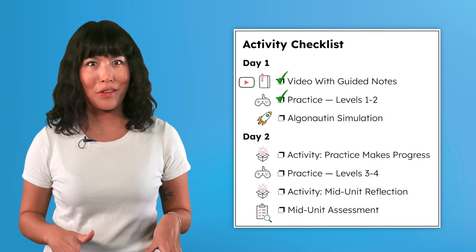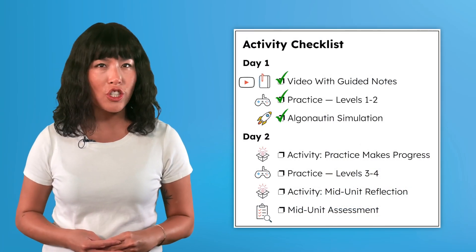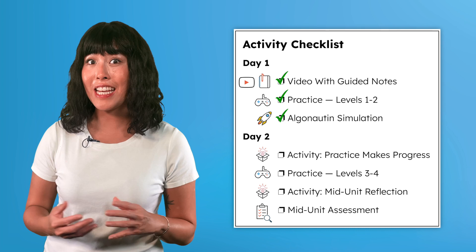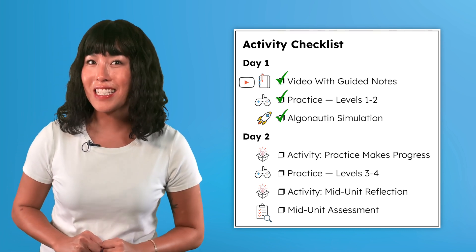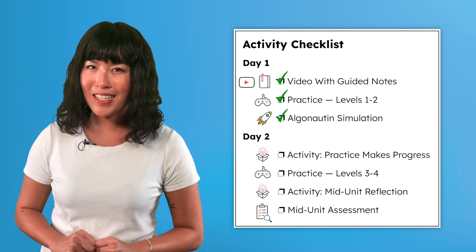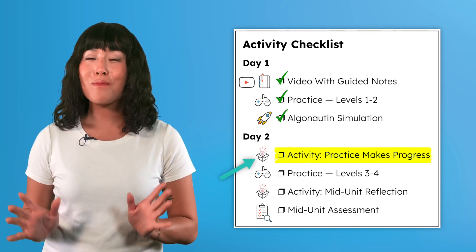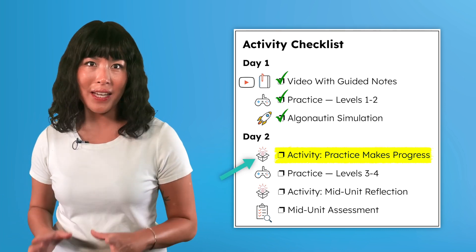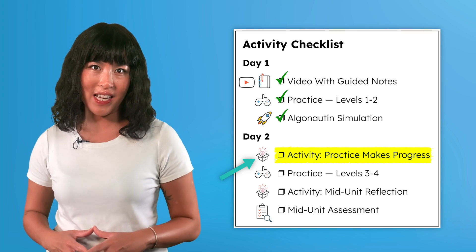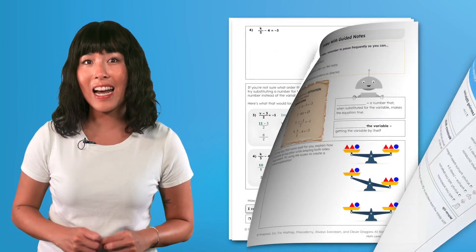We've wrapped up day one of our example lesson. To start day two, according to our activity checklist, we need to start with an activity called Practice Makes Progress. This icon indicates it's a PDF activity, which can be found on the pages of the lesson PDF following the guided notes.